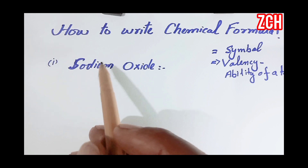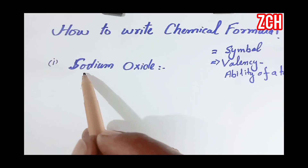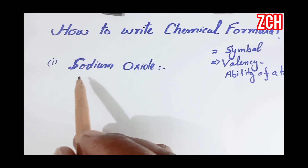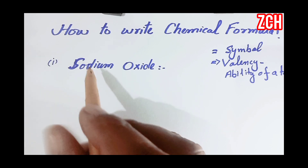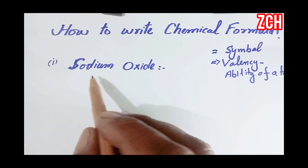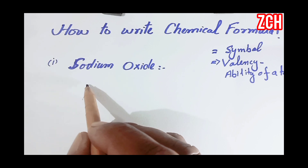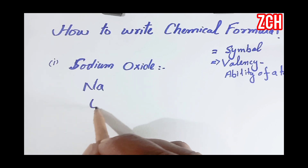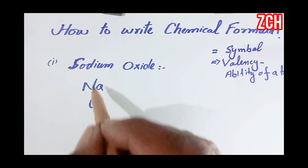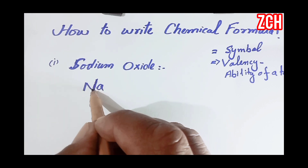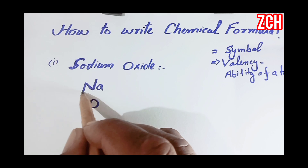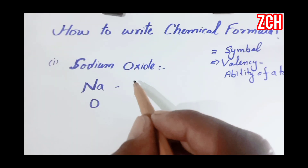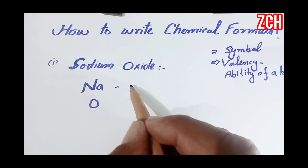Now we will write the chemical formula of sodium oxide. In sodium oxide, two elements are present: one is sodium atom and the other is oxygen atom. The first thing is that we must know their symbol. Next we must know their valency.